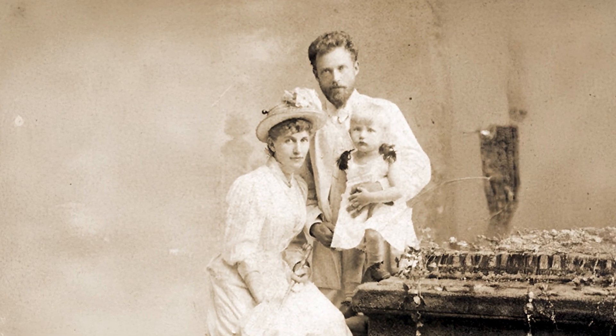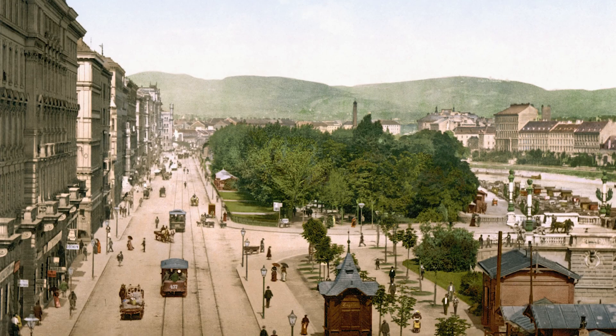To understand why Schrödinger's cat became the main symbol of quantum weirdness, we need to go back to a time when science was at war with itself. Erwin Schrödinger was born in 1887 in Vienna, Austria.